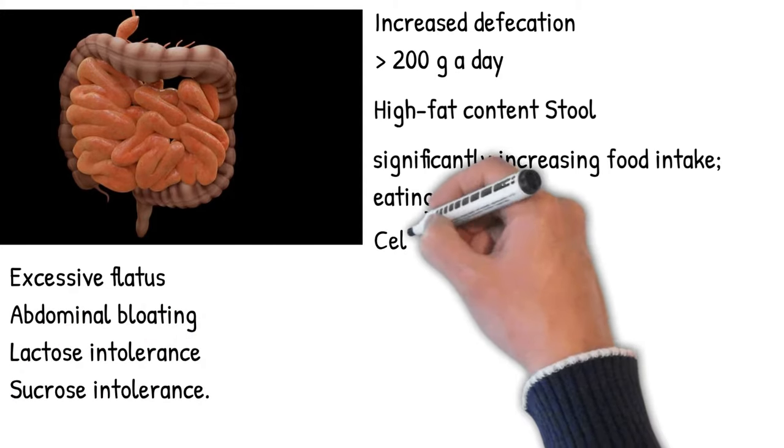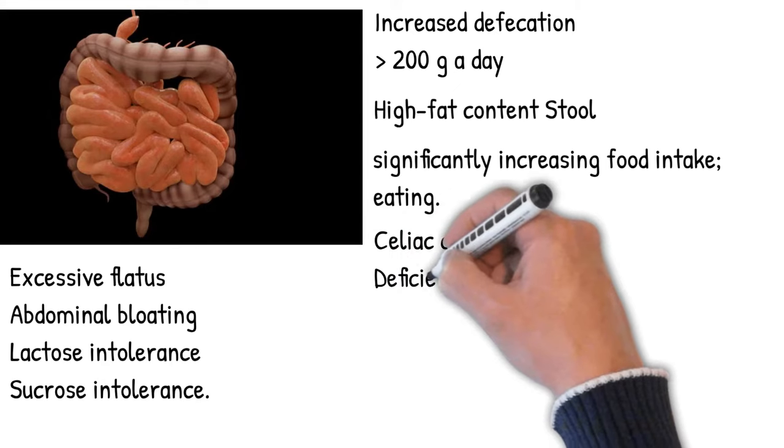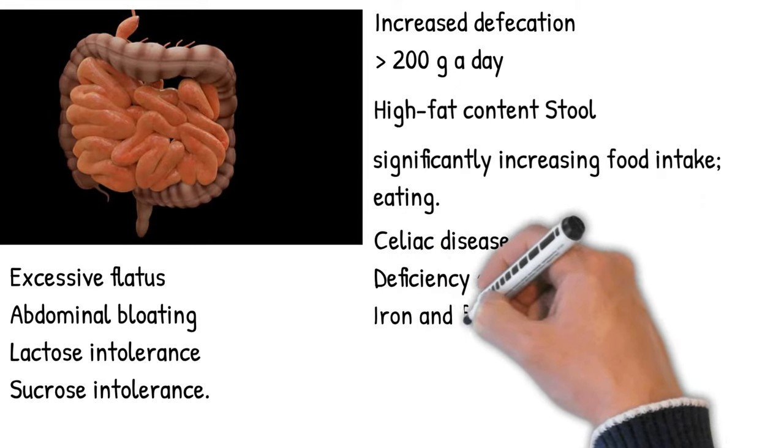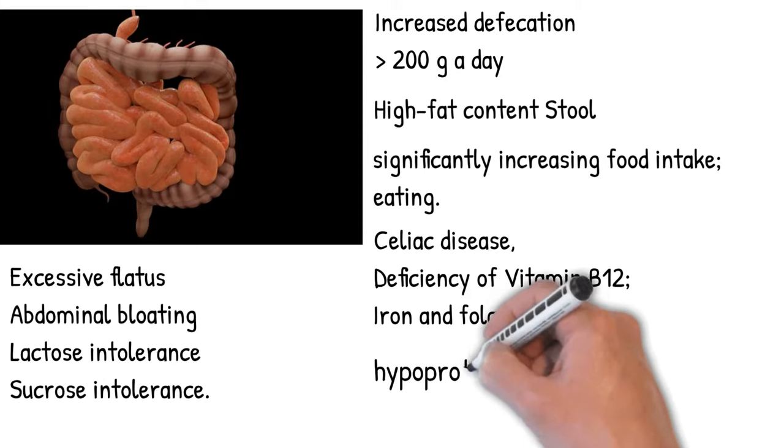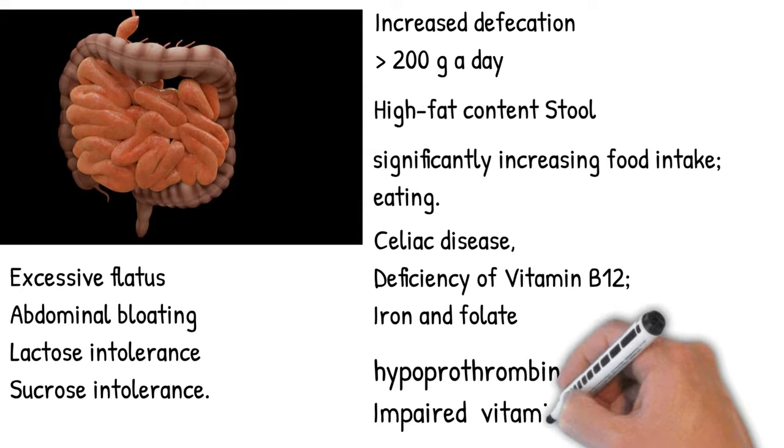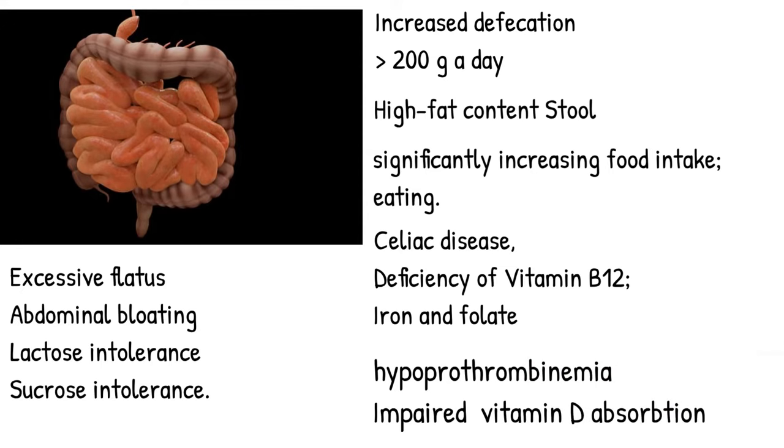Malabsorption is associated with celiac disease, deficiency of vitamin B12, iron and folate, hypoprothrombinemia secondary to vitamin K malabsorption, impaired calcium and vitamin D absorption, and chelation of calcium by unabsorbed fatty acids resulting in fecal loss of calcium.